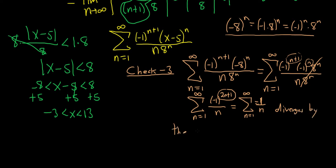It diverges by the p-test, since p = 1, which is less than or equal to 1. The sum of 1/n diverges, and putting a negative in front of it doesn't help — it still diverges. So because we have divergence at x = negative 3, we do not include negative 3 in our final answer, so we use a parenthesis there.